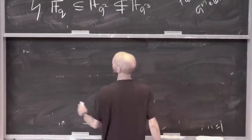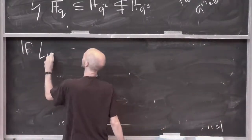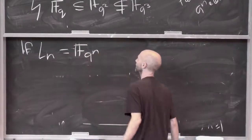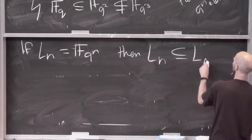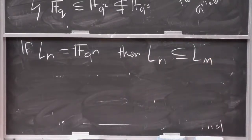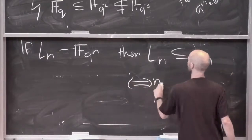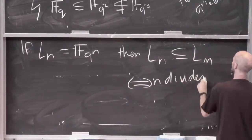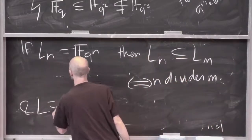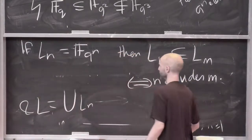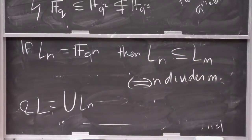Setting L_n to be the field with q^n elements, L_n ⊆ L_m if and only if n divides m — that's how it works, unlike the cyclotomic case where it was n ≤ m. And L is the union (filtered colimit) of the L_n.